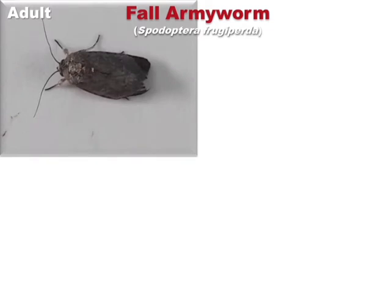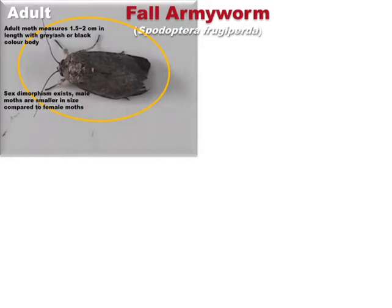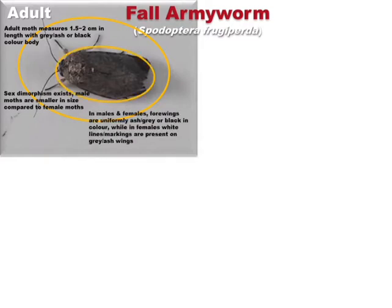Fall armyworm is a moth which belongs to the order Lepidoptera. These moths' bodies measure one and a half to two centimeters in length and are ash, gray, or black in color. In these moths, sexual dimorphism exists — the male moths are smaller than the females, and the forewings are uniformly black, gray, or ash in color in males.